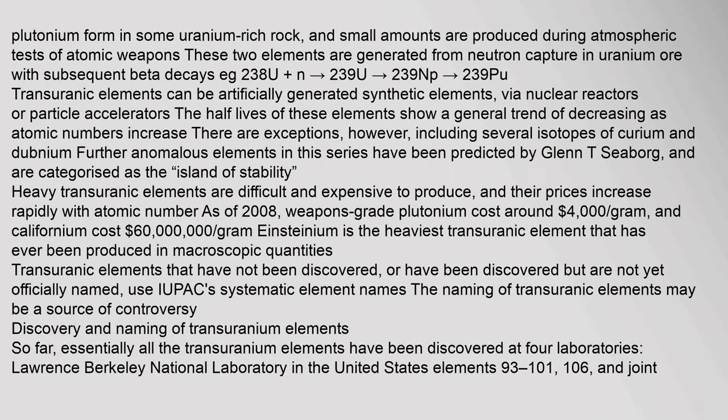A periodic table shows elements colored according to the half-life of their most stable isotope. Plutonium forms in some uranium-rich rock, and small amounts are produced during atmospheric tests of atomic weapons. These two elements are generated from neutron capture in uranium ore with subsequent beta decays, e.g., 238U → 239U → 239Np → 239Pu. Transuranic elements can be artificially generated as synthetic elements via nuclear reactors or particle accelerators. The half-lives of these elements show a general trend of decreasing as atomic numbers increase, with exceptions.